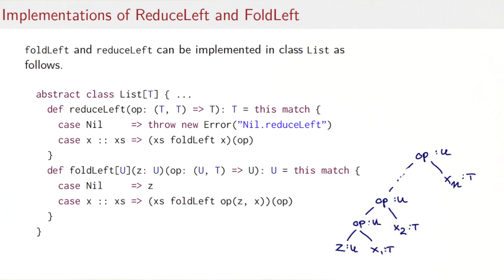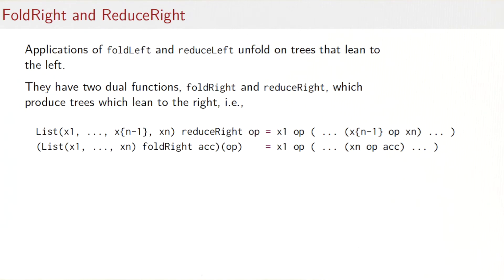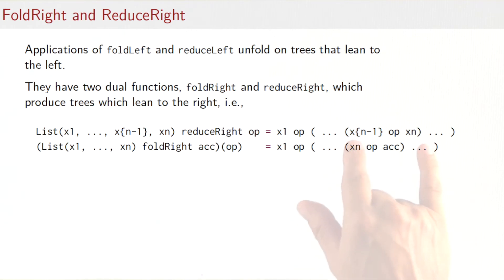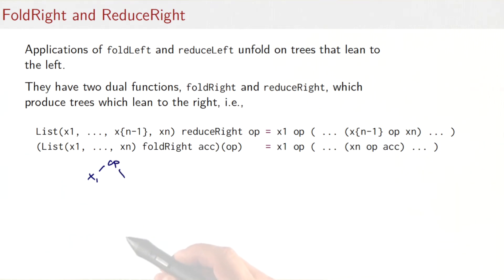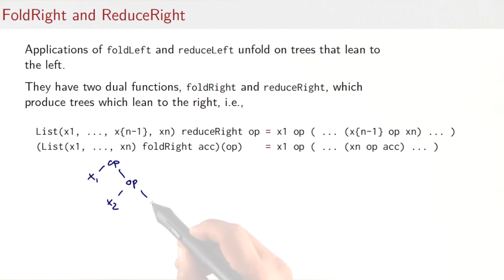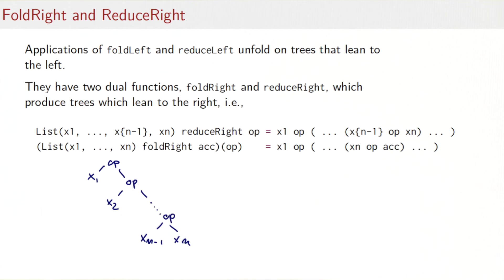We've seen that foldLeft and reduceLeft produce trees that lean to the left. It makes sense to have a dual pair of operations that unfold to trees that lean to the right — these are called foldRight and reduceRight. ReduceRight puts an operator between adjacent elements but the parentheses go to the right, not to the left. So the first operation takes x1 and the whole result of a fold of the rest of the list, producing a right-leaning tree ending with xn-1 and xn.